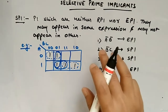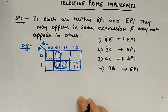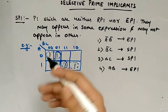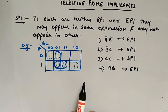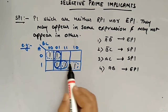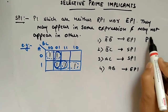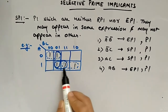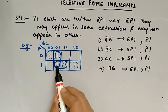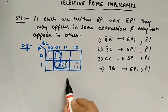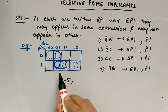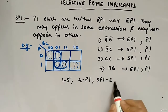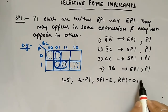So you have to check both: it should not be EPI, it should not be RPI, and the remaining is SPI. It's like left-out groups are called selective prime implicants. They all are prime implicants. Each of the min terms are implicants — so five implicants total. There are four groups, so four prime implicants. Selective prime implicants are two, redundant prime implicants are zero, essential prime implicants are two.